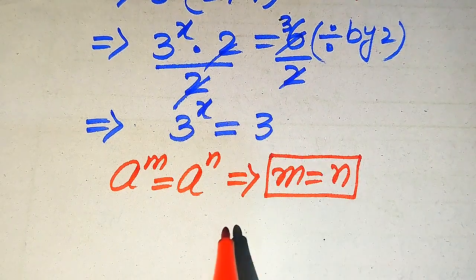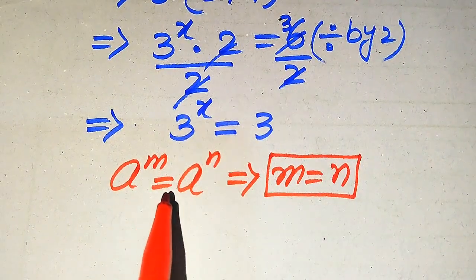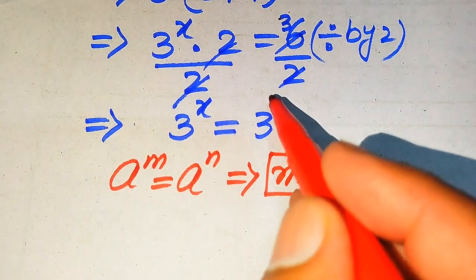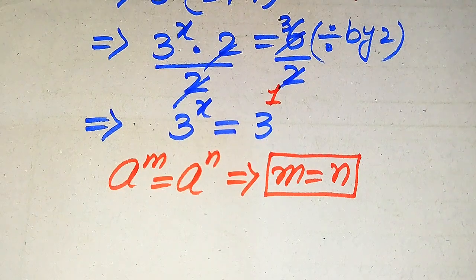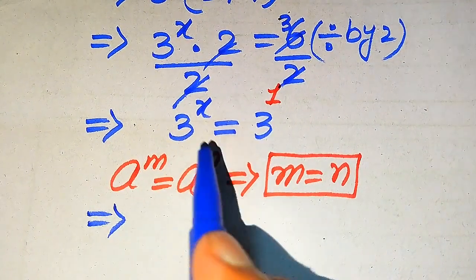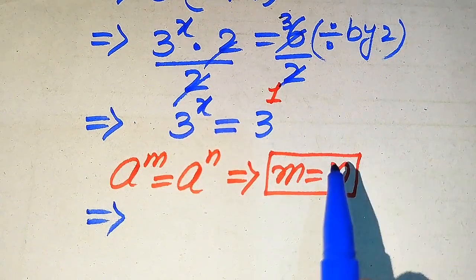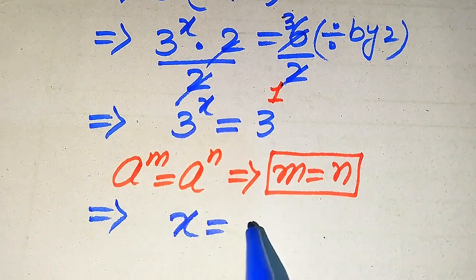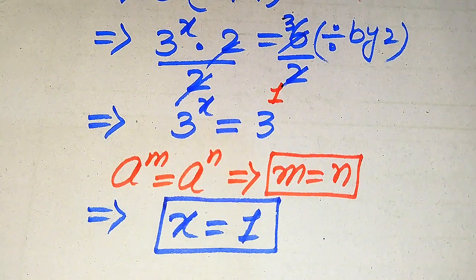We apply this rule only when the bases on both sides are the same. Then according to this rule we equate the exponents. You can see the exponent on the right hand side is 1, and the bases on both sides are the same, so we equate the exponents. This gives us x equals 1.